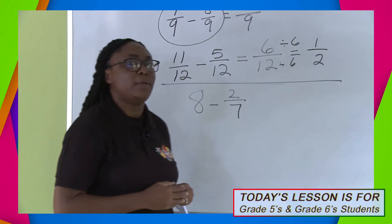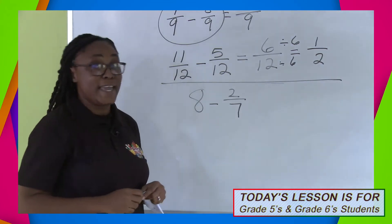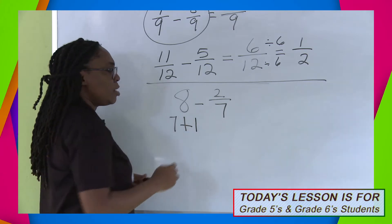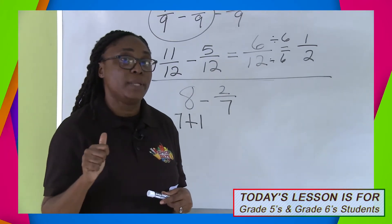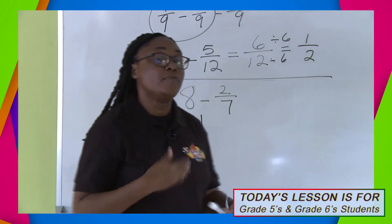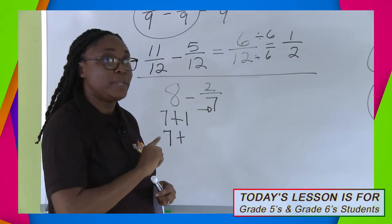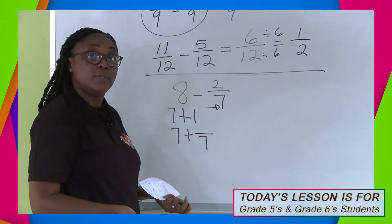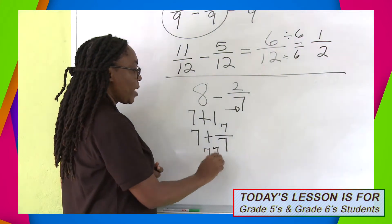Looking at something like that, somebody might think it's a bit difficult. So let's make things easier. Is it possible that 8 equals 7 plus 1? Yes. So this 8 becomes 7 plus 1. If I am to get a whole in fraction form, my numerator and denominator must be the same. So I'm going to keep my 7, and this 1 will be converted. We want to keep the denominators alike, so my denominator will be 7. For a whole, my numerator must also be 7.